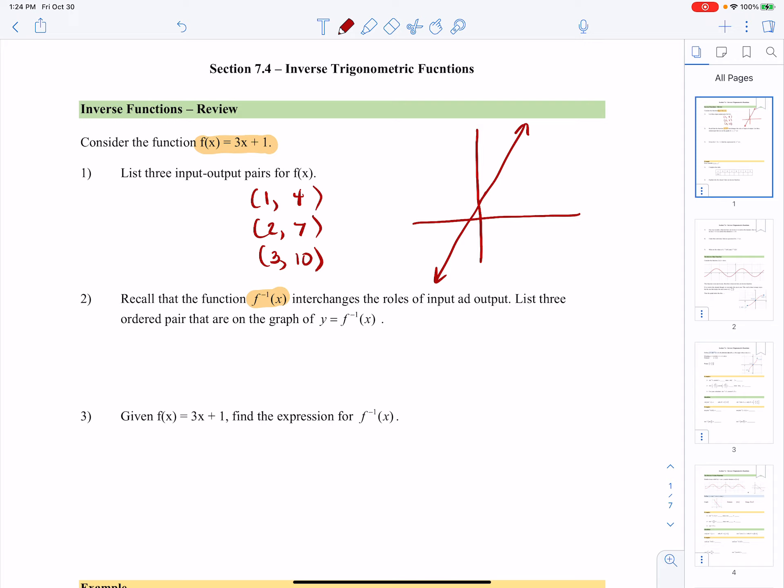So if I want to list three pairs on that function, remember, since the roles are just reversed, 1, 4 becomes 4, 1, 2, 7 becomes 7, 2, and 3, 10 becomes 10, 3.